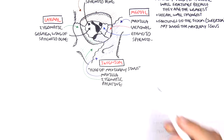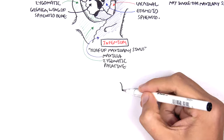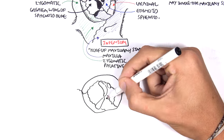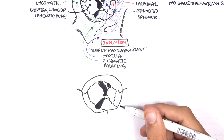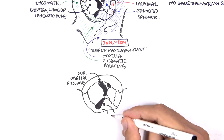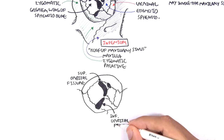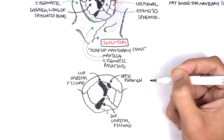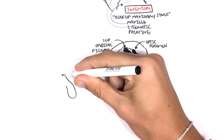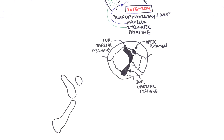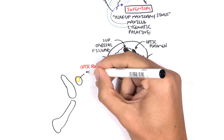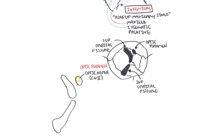There are three important holes inside the orbit: the superior orbital fissure, the inferior orbital fissure, and the optic foramen. The optic foramen has two important structures passing through it: the optic nerve, cranial nerve number two, and the ophthalmic artery, which supplies the retina.